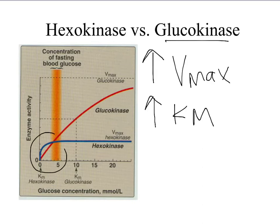When glucose concentrations are low, hexokinase has an increase in enzymatic activity. This is important because glucokinase is found in the liver — at very high glucose concentrations when glucose needs to be converted to glycogen in the liver, the enzyme is working very well. At lower levels of glucose, when glucose needs to get into muscle and fat cells, hexokinase is working better. Also, hexokinase is inhibited by glucose 6-phosphate, but this is not the case with glucokinase, which is good, because if there is a lot of glucose 6-phosphate but still high blood glucose, we still need to get that glucose into the liver to make glycogen.